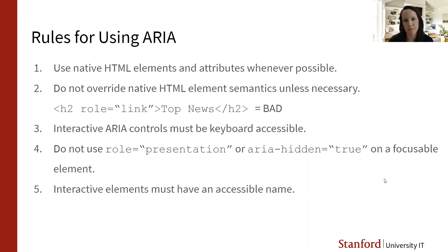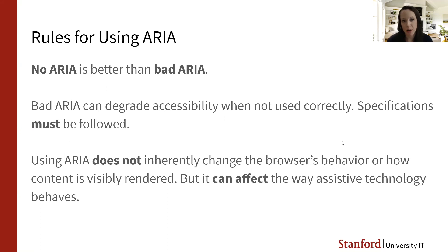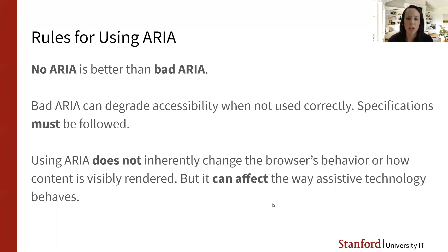Any interactive elements must have an accessible name. Fundamentally, no ARIA is better than bad ARIA. Bad ARIA can really degrade the accessibility of a web page when it's not done correctly, so you really need to dig into the spec and follow it. Another important thing: when you add ARIA roles and attributes, it does not change the browser's rendering behavior. If you put role equals button on a div, nothing happens visually, and it doesn't automatically become keyboard focusable. You have to add all that manually — but it does impact how assistive technology behaves.